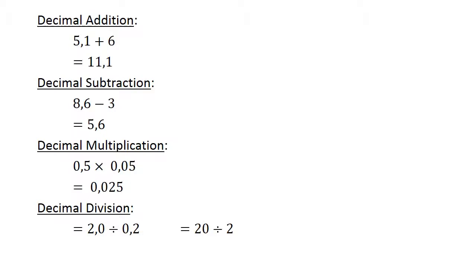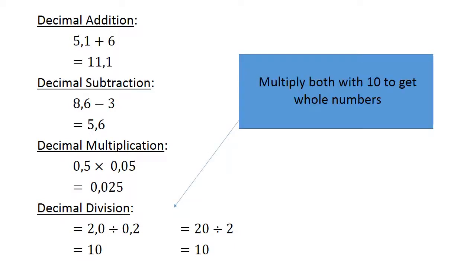Decimal Division: 2.0 divided by 0.2 equals 20 divided by 2. We multiply both with 10 to get whole numbers. Equals 10.